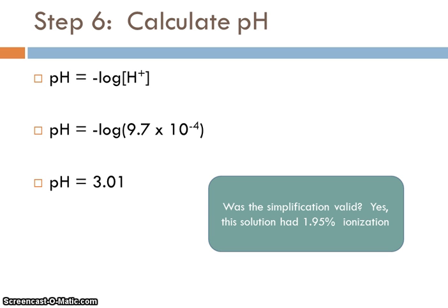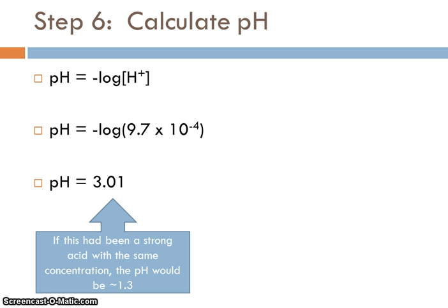All right. Now, remember, we had made a simplification so that we didn't have to use the quadratic equation. We said X has to be less than 5%. It was. If we take our value for X, which was 9.7 times 10 to the minus 4th, and divide it by the initial concentration of the acid, it comes out to be 1.95%, so it was a reasonable approximation. We end up with a pH of 3.01. I did want to point out that if this had been a strong acid with the same concentration, the pH would have been more like 1.3. So this is substantially less acidic than a strong acid solution, which is what we expect to see with weak acids.